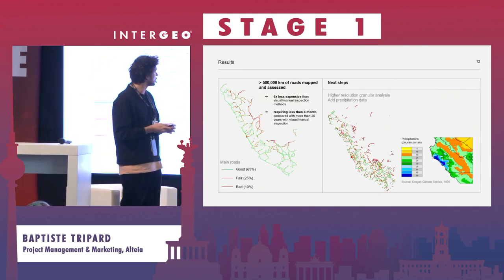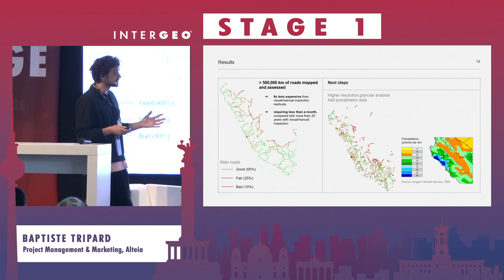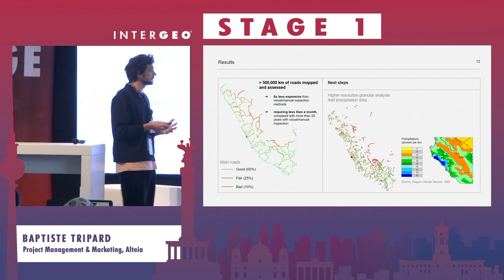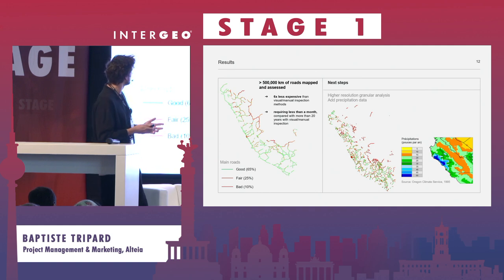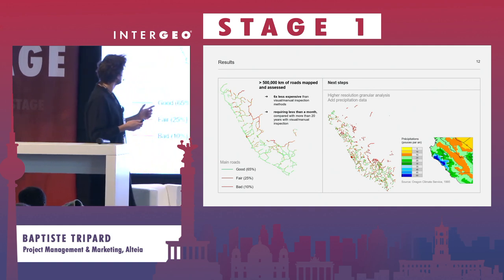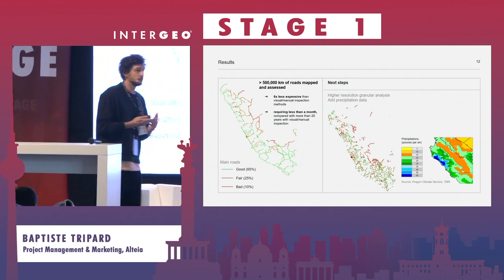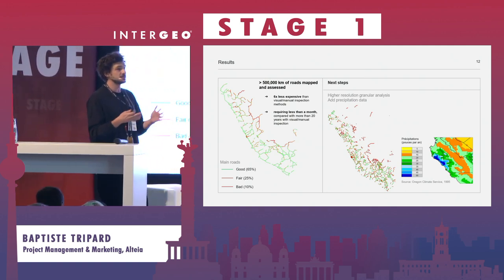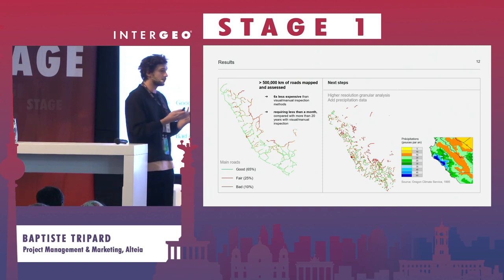Closing on the benefits and next steps for this type of large-scale initiative mostly relying on freely accessible data: for Peru, we mapped more than 500,000 kilometers of roads, mostly in rural areas where you don't usually get any information. This is highly critical to connecting those rural populations.